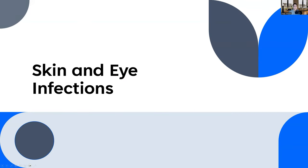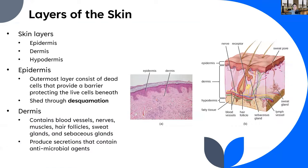Hi, everyone. In this video, I'm going to be introducing you to infections of the skin and the eye. We'll start by talking about the layers of the skin and the anatomy of the skin and eye, so we can get an understanding of what those infections might look like, the tissues being impacted, and what the body can do to prevent or fight off these infections.